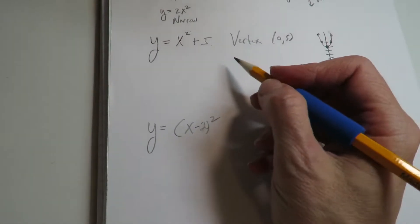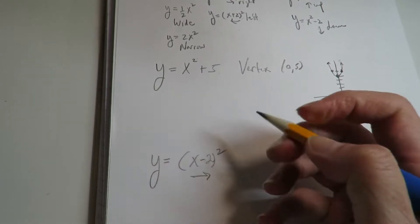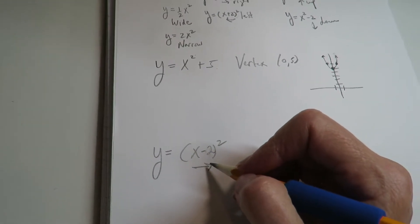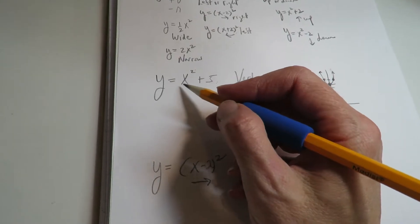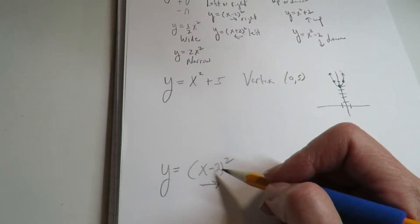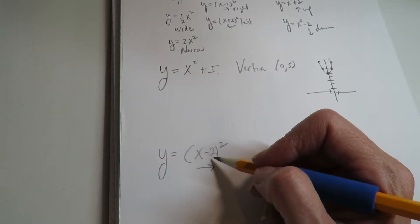Now this one's on the inside. We just talked about this a minute ago. This would mean this goes to the right. Remember, if it's inside, it's left or right. If it's outside of the quadratic, it's up or down. If it's inside the quadratic, it's left or right.